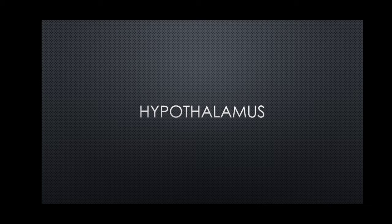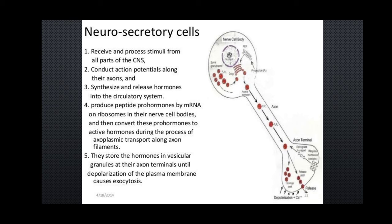We'll be discussing the hypothalamus in this video. First, let's learn a little about neurosecretory cells. These are specialized neurons which have the capacity of producing an additional chemical signal — a chemical messenger molecule called hormones — along with their normal neurotransmitter signals. They have the normal processes of a normal neuron, but also have the property to secrete peptide hormones.